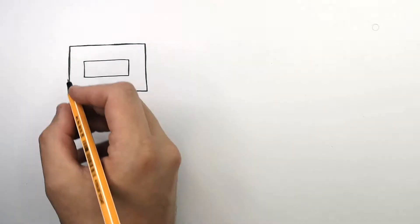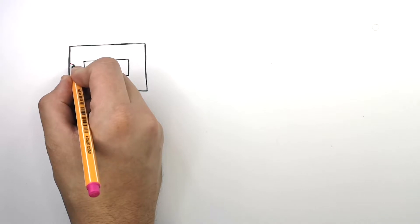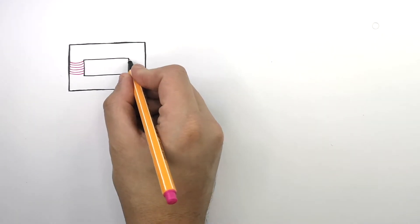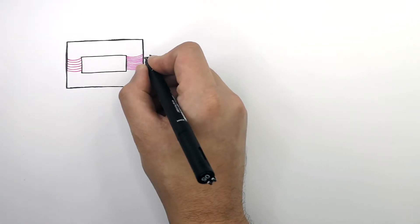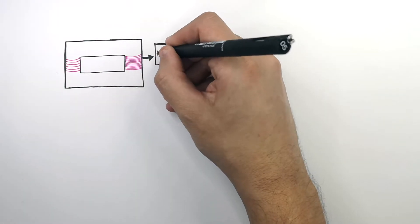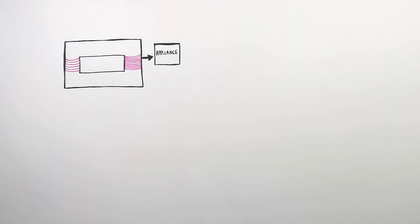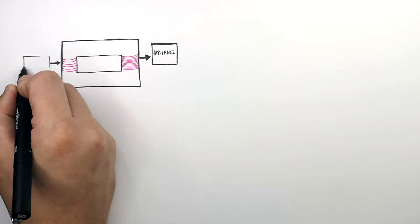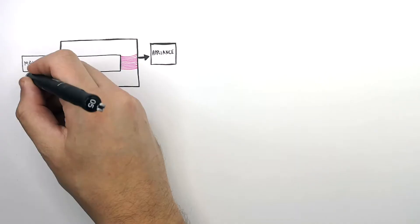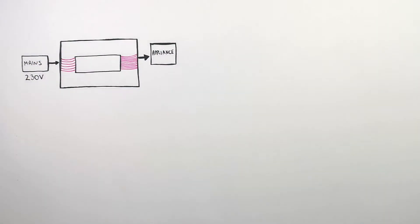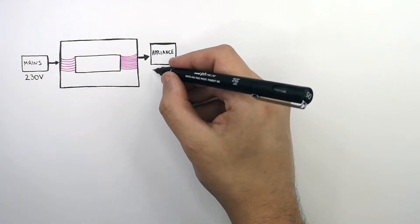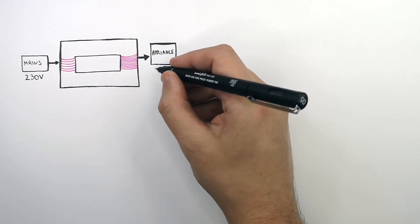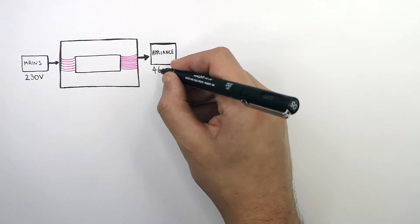This is the iron core of a step-up transformer with more turns in the secondary coil than in the primary coil. This transformer steps up the potential difference to supply an appliance with sufficient voltage. The voltage supplied to the primary coil from the mains power supply is 230 volts, which is stepped up to supply the appliance with a potential difference of 460 volts.